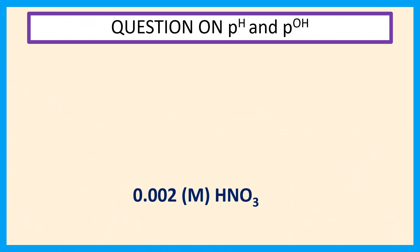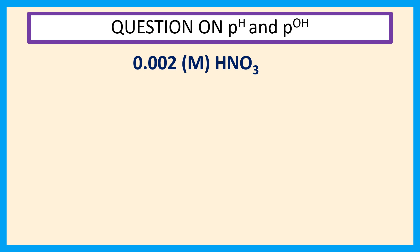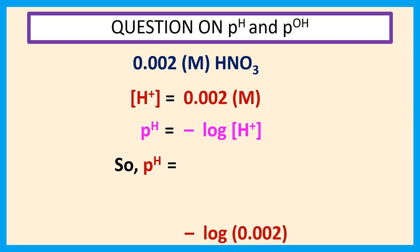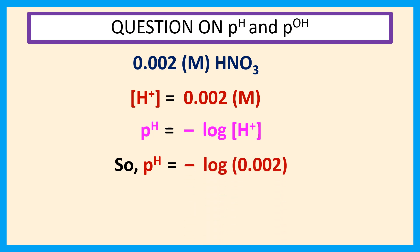Here, given a 0.002 molar HNO3 solution, the concentration of H⁺ is equal to 0.002 molar. We know pH is equal to minus log of the concentration of H⁺. Now, putting the value of concentration of H⁺ into this equation: pH = minus log(0.002), so pH = 2.69. Thank you for watching this video.